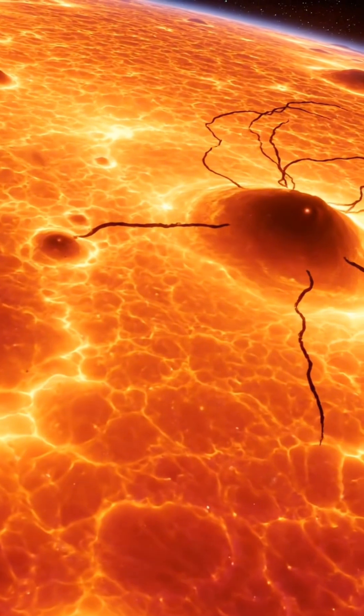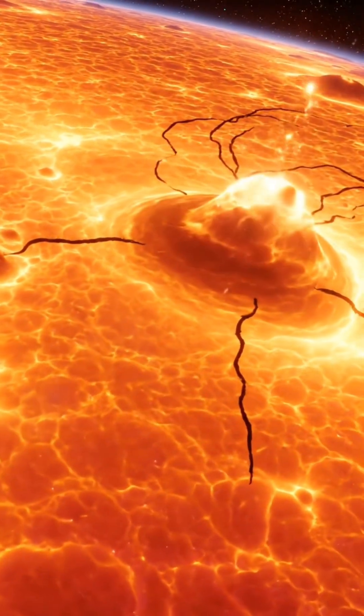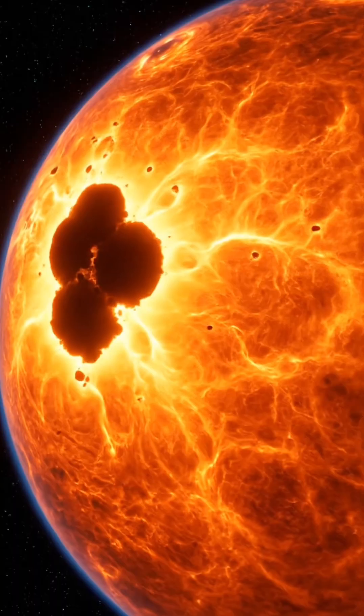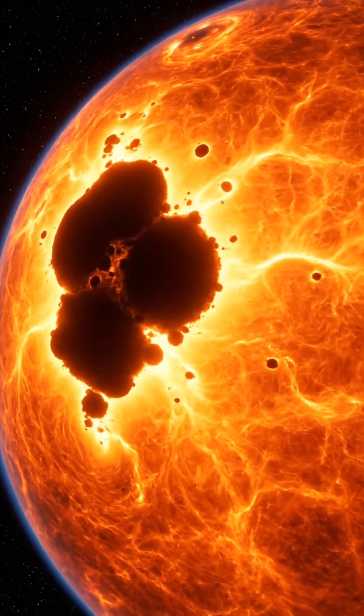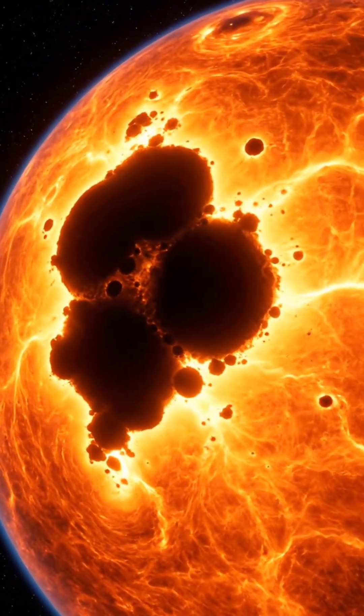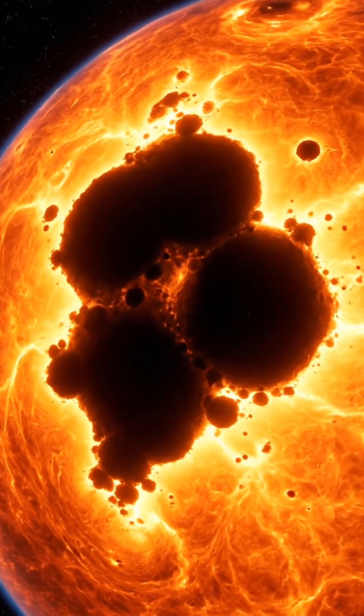But right now, on the surface of the sun, a massive sunspot group has turned directly toward Earth. It is so large that it could engulf our planet several times over.